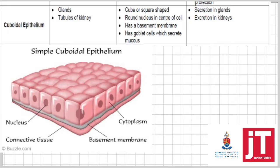Cuboidal epithelium — from its name, cube-shaped. You can see that this tissue is cube-shaped with a round nucleus in the center and a basement membrane. This tissue can also have goblet cells, which secrete mucus. Cuboidal epithelium is found in two places: glands and the kidney. Glands secrete hormones or other substances — for example, a sweat gland secretes sweat — so when found in glands, the function is secretion.